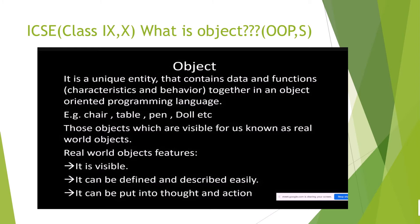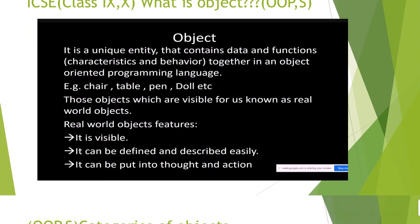We can see, touch, and feel real world objects. They can be defined and described easily. For example, a pen — how it is made, whether it is blue or black. It can be put into thought and action: we can write with a pen, play with a doll, keep books on a table or chair.